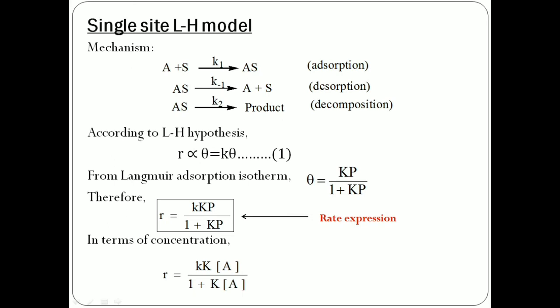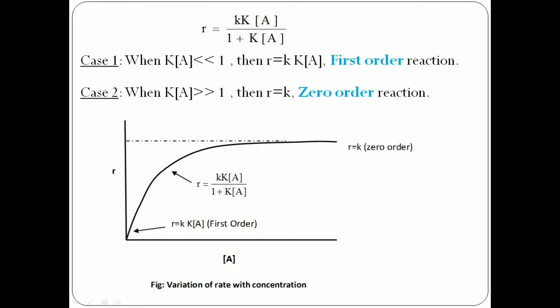Substituting this value of theta into the rate expression in rate equation 1, we get the rate expression for the Langwood Insolute Single-Site Model. This rate expression can also be written in terms of concentration. From this equation, there are two special cases. In case 1, when the concentration of the reactant is very low, the rate of the reaction is first order. In case 2, when the concentration of the reactant is very high, the rate of the reaction is independent of the concentration — that is, it is a zero order reaction.